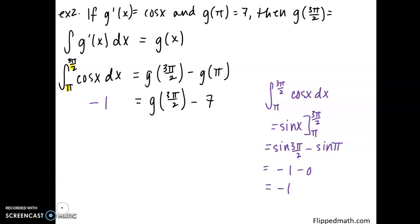The integral evaluates to negative 1. Now I'm just manipulating an equation for an unknown. So I'm going to add 7 to both sides. And the value of g of 3 pi over 2 is 6. This strategy and technique will become extremely important when we start looking at graphs, and we have to determine what the value of the function is given the graph of the derivative.